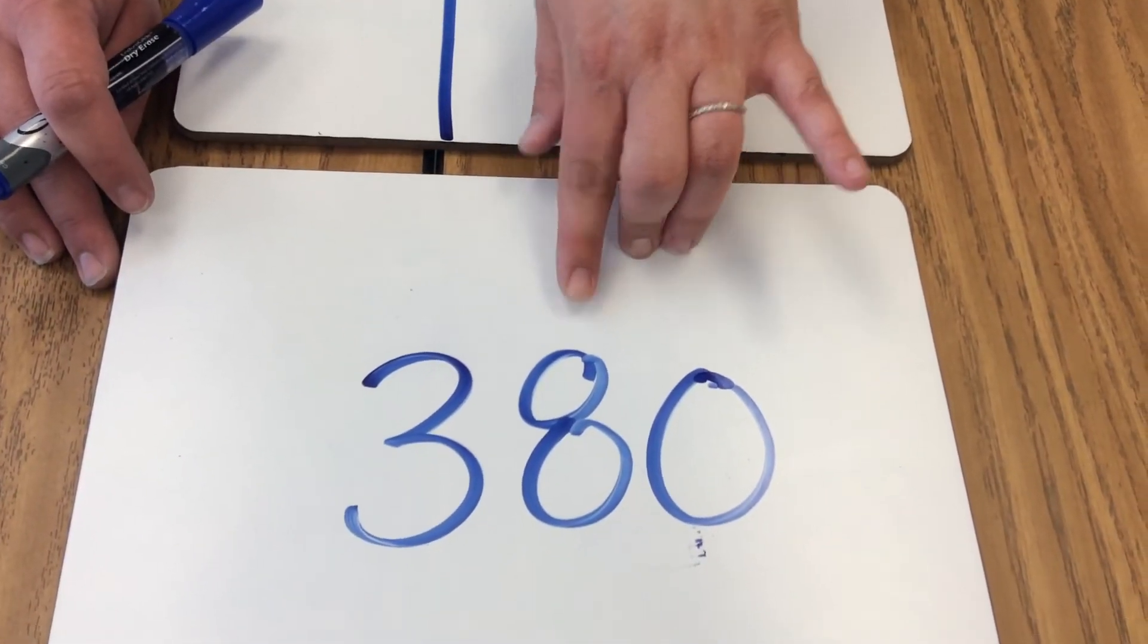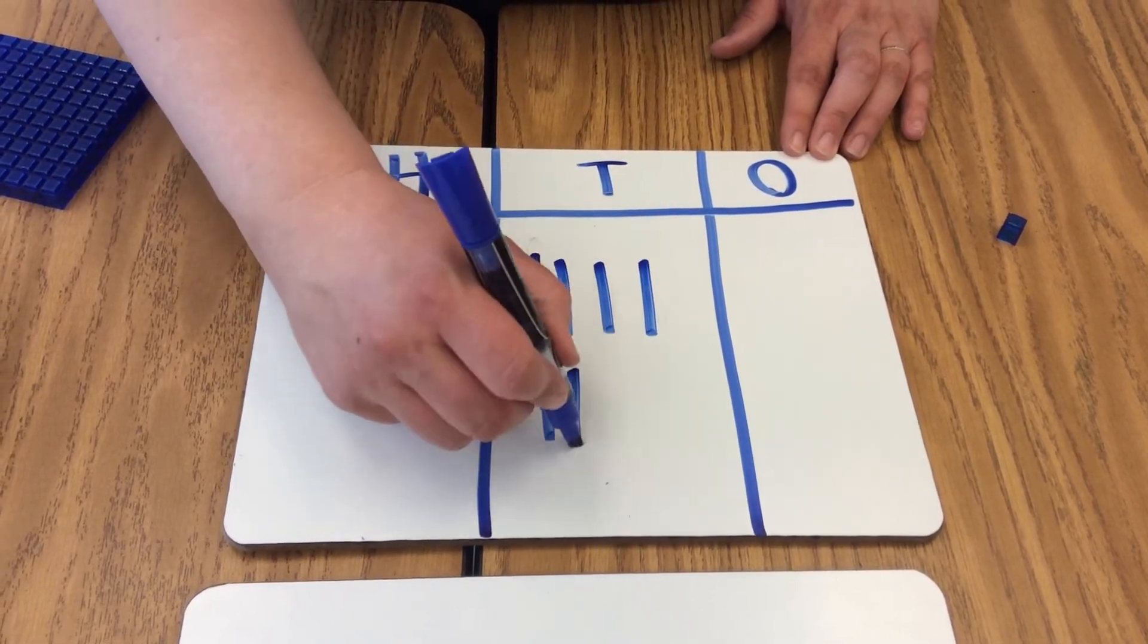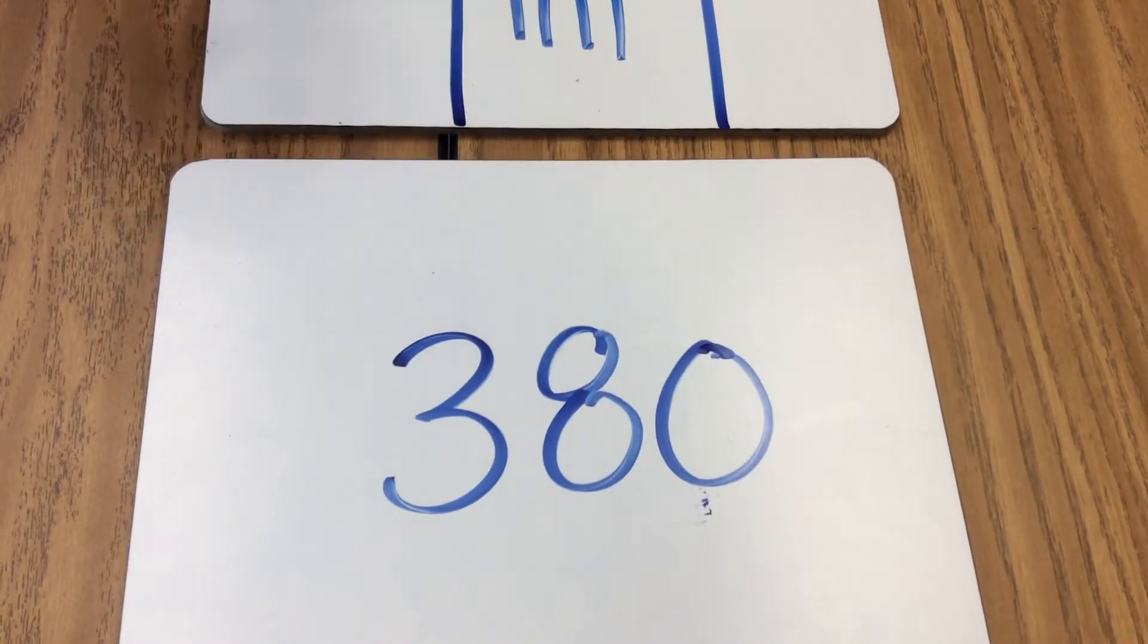We're going to move to our tens. We have eight tens. And then we have three hundreds.